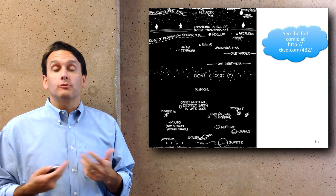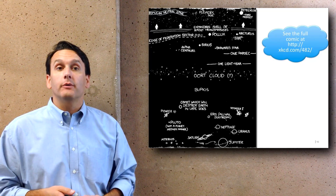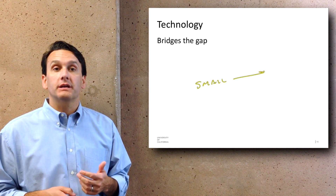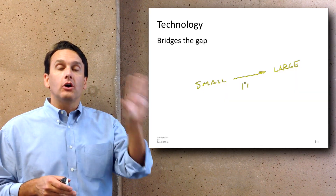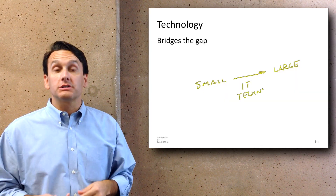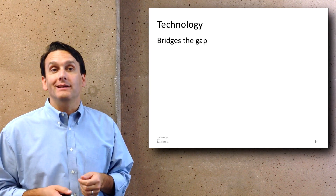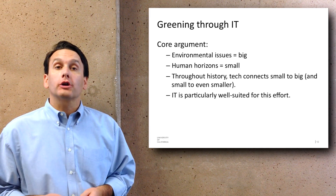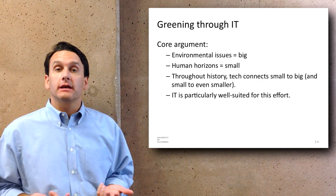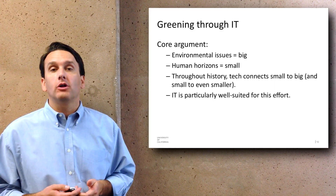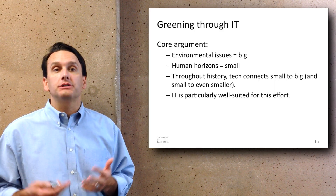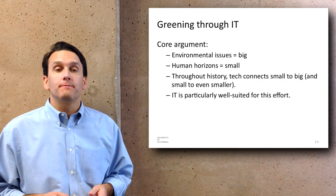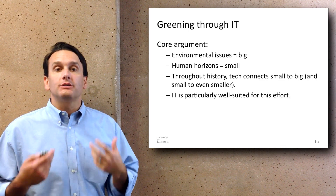I would encourage you to look at the XKCD comic, which does an interesting job of pointing out the relative scales of a lot of different things in the scope of human experience. Looking at this distinction between large-scale environmental problems and relatively small-scale human problems, there's an important role for technology. Across human history, technology has bridged the gap between large scales and small scales. The core argument in my book is that information technology in particular is well suited for this effort.